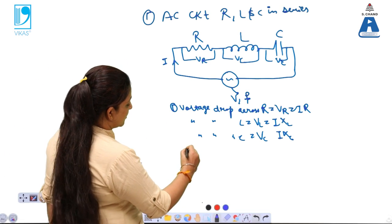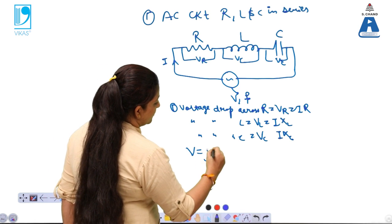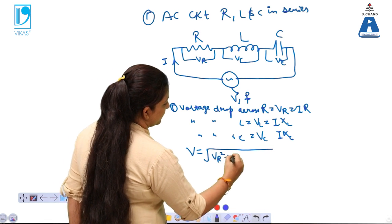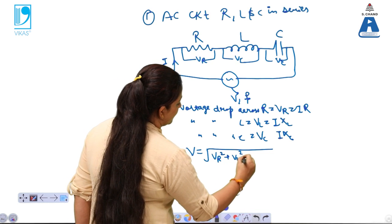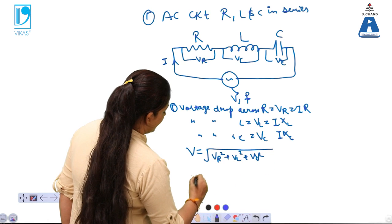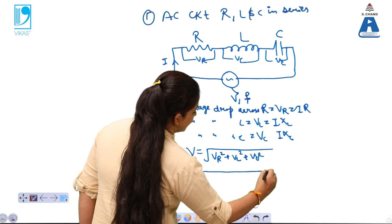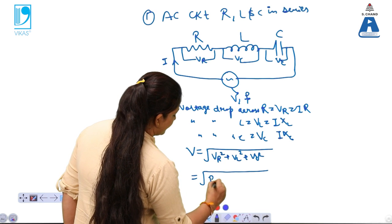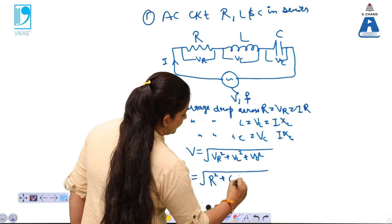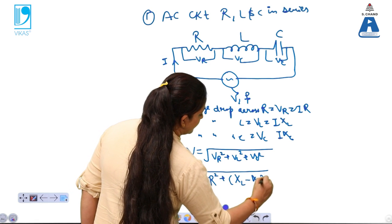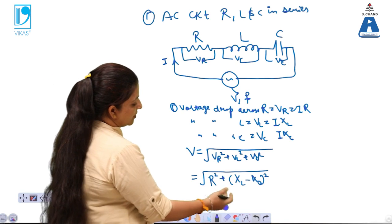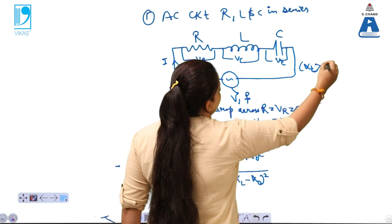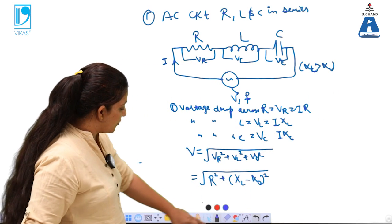Now the resultant voltage is calculated as the square root of VR squared plus VL squared plus VC squared. In terms of resistance, the resultant impedance Z is given by the square root of R squared plus (XL minus XC) squared. Note: you can use XC minus XL as well. In this case, XL is more than XC, so this formula gives the resultant voltage.